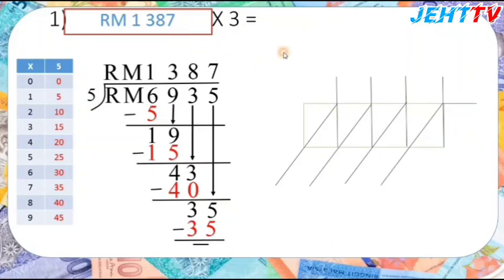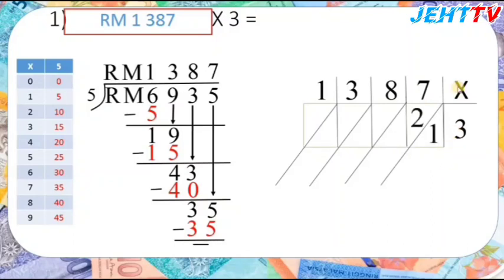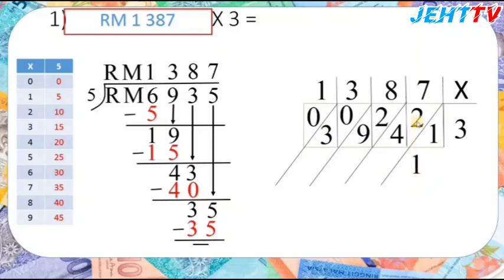After that we do the multiplication: 1,387 multiplied by 3. So 3 times 7 equals 21, 3 times 8 equals 24, 3 times 3 equals 9, 3 times 1 equals 3. Then we add: first digit 1, then 2 plus 4 equals 6, then 2 plus 9 equals 11.